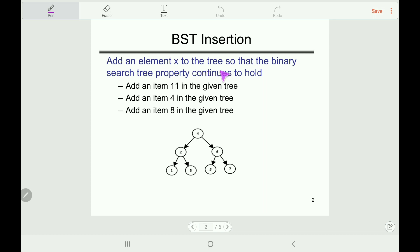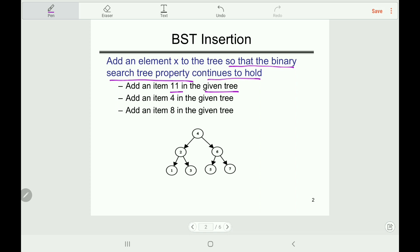Let's start with insertion. To add an element X to the tree so that the binary search tree property continues to hold — that means if we add a node X, the tree must maintain the BST property. For example, let's add item 11 to the given tree.